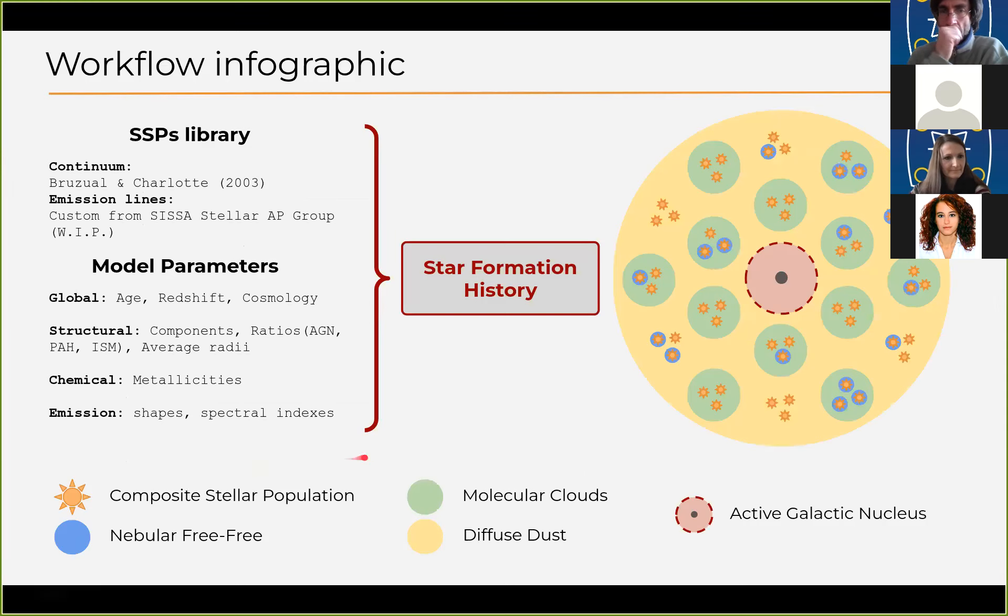Let me show you this simplistic infographic which summarizes the workflow of our library. It takes as input the simple stellar population libraries that we do not compute on the fly, and some parameters defining the models that are implemented within the tool. These components are processed through our star formation history module that produces simplified galactic objects in which we have different stellar populations of different ages that might or might not be still within their molecular birth cloud and are embedded within a more diffused dust medium. We also include the possibility of adding the emission from an active galactic nucleus.